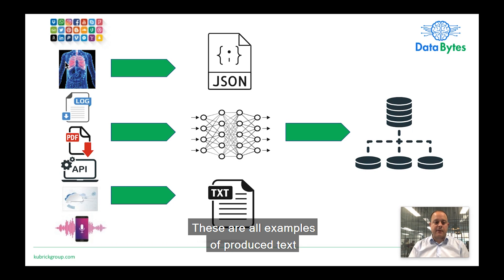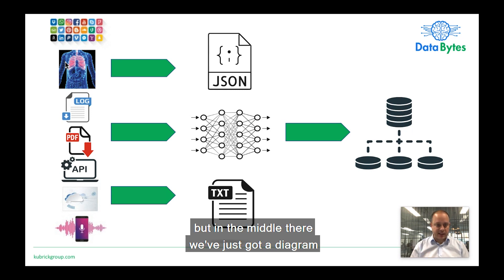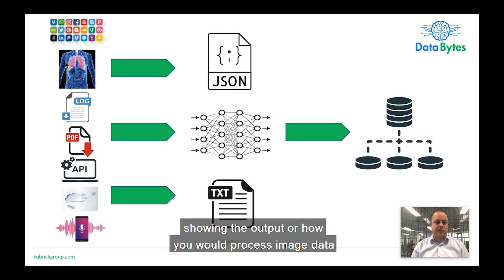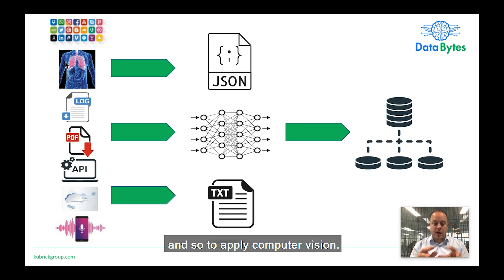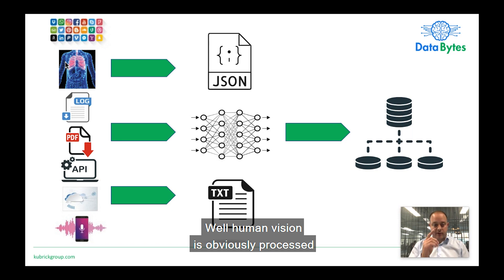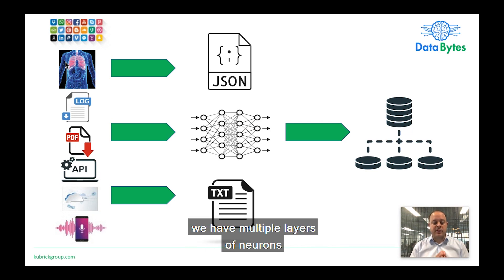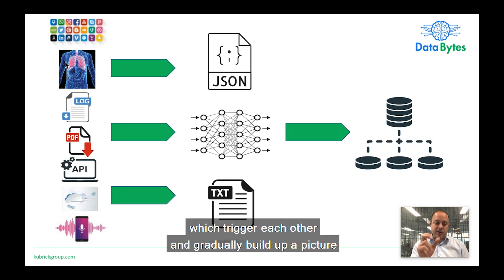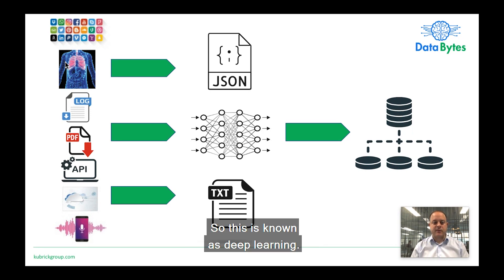Log files, PDFs, web scrapes, and transcribed voice logs are all examples that produce text. There's also a diagram showing how you would process image data to understand what an image contains and apply computer vision. Human vision is processed by neurons in the brain — well, computer vision mimics the same thing through neural networks. We have multiple layers of neurons which trigger each other and gradually build up a picture so they can recognize and classify what they're looking at. So this is known as deep learning.